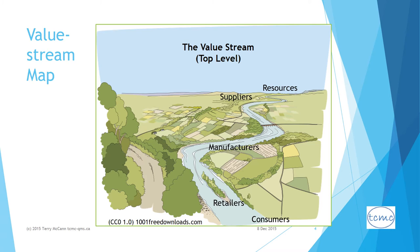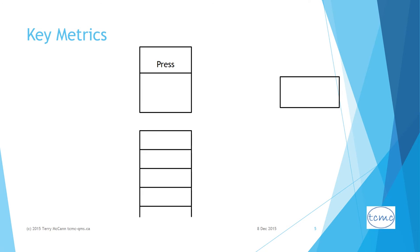Importantly, the VSM also shows where there are activities and events that do not add value. The value stream, always seen from the point of view of the customer or consumer, can be viewed at various levels — from very high, as in this illustration, or drilling down to any useful level of interest.